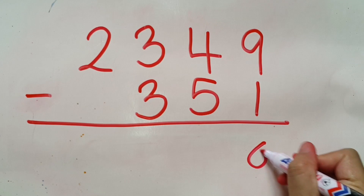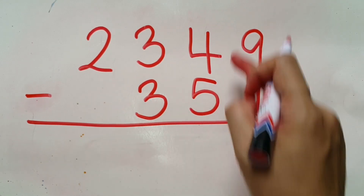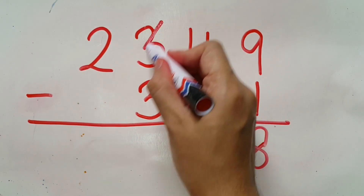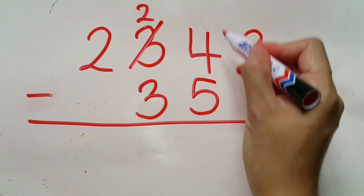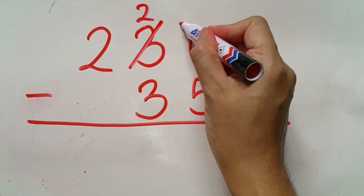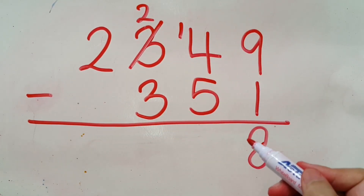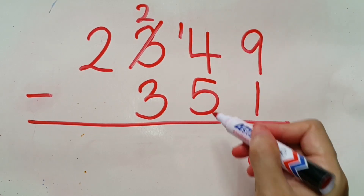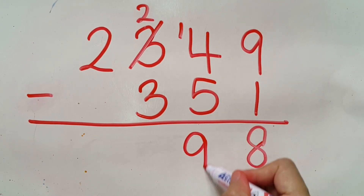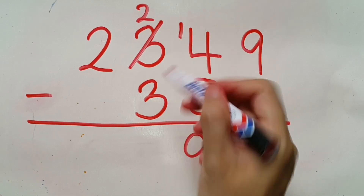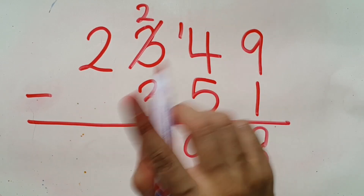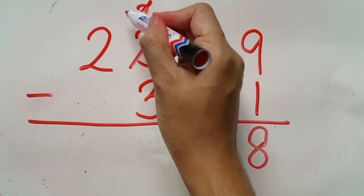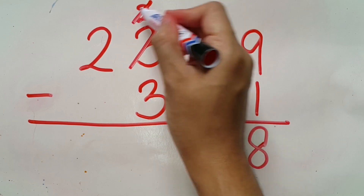Nine minus one will be eight. Four minus five cannot work, so we borrow ten from the left neighbor. Four becomes fourteen, and fourteen minus five will be nine. Two minus three won't work either, so we borrow ten again — two becomes twelve.